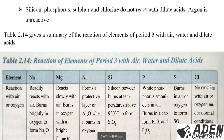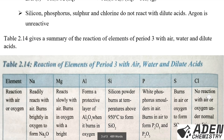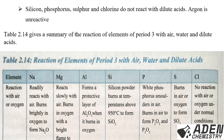Silicon, phosphorus, sulfur, and chlorine do not react with dilute acids because they cannot displace hydrogen from the acid. Argon is unreactive and therefore will not react with dilute acids either.